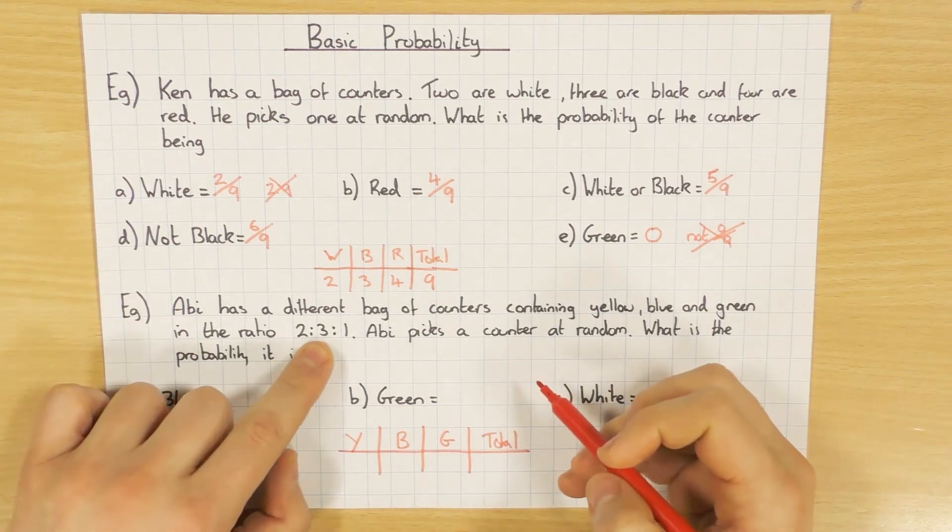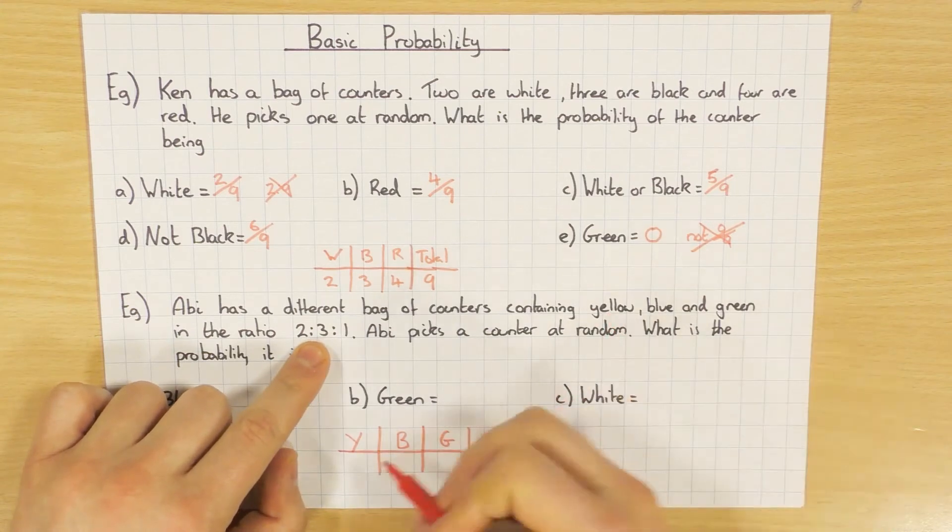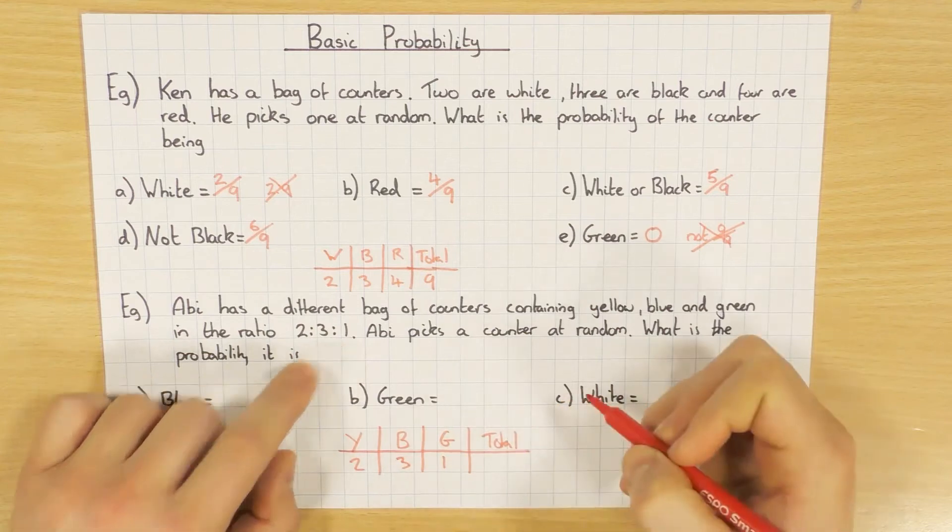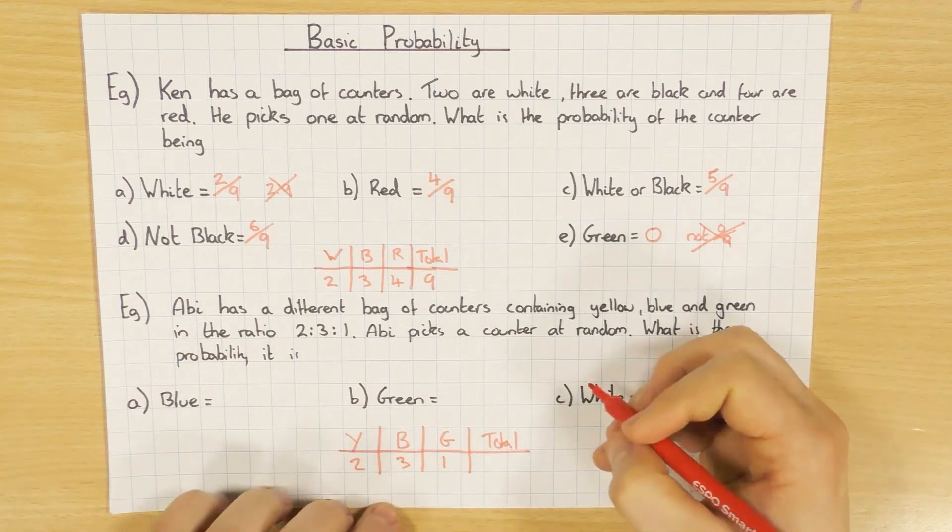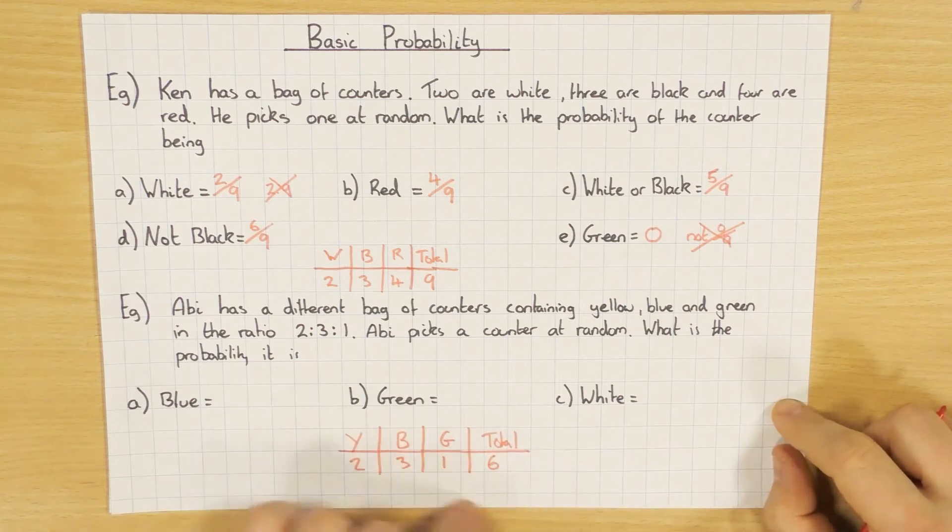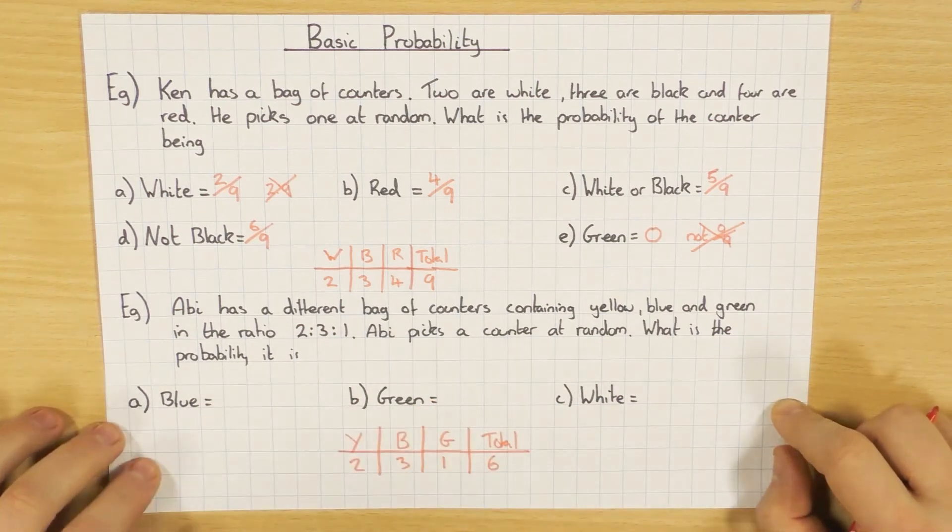So how many do I have? Well, it's in the ratio of 2:3:1. So two for yellow, three for blue, and one for green. What's the total? Two, add three, add one. Obviously we're going to have a total of six. So that's going to help us work out the probabilities for these questions here.